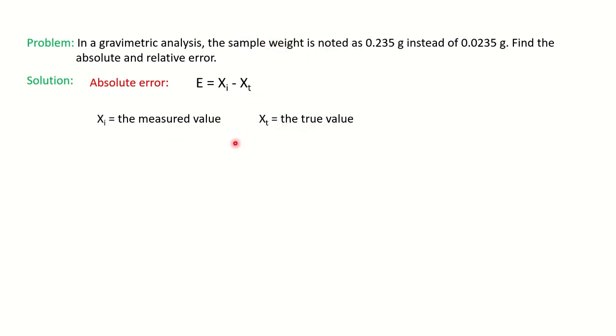In this problem, how do we find out which is measured and which is true value? As you can note, sample weight is noted as 0.235 means it is a measured value, so it will be represented as xi, and the true value is given as 0.0235.